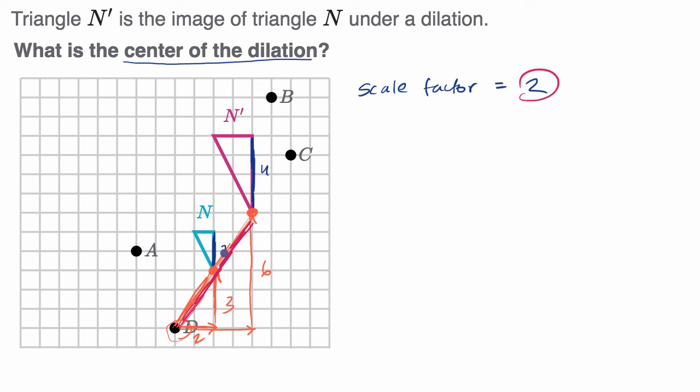So there's a couple of ways to think about it. One, if you connect corresponding points, your center of dilation is going to be on a line that connects those two points. And the image should be the scale factor as far away from the center of dilation. In this case, it should be twice as far from the center of dilation as the point that it is the image of.